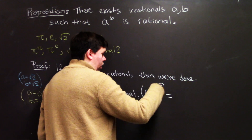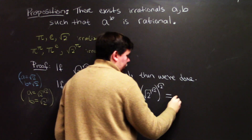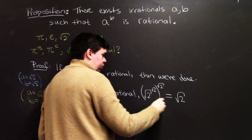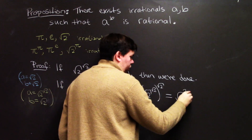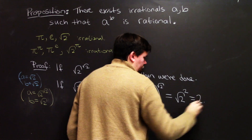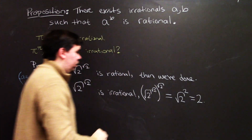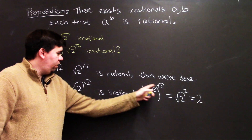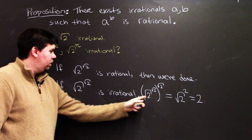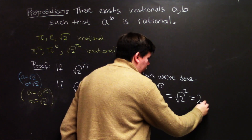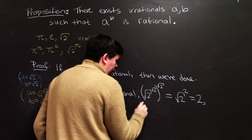Notice what happens. If the square root of 2 to the square root of 2 is irrational, then a to the b — that is, (√2^√2)^√2 — gives a power to a power: you multiply exponents, so it becomes √2 to the power of (√2 × √2), which is just √2 squared, which equals 2. We have an irrational to an irrational coming out to be 2, which is rational.